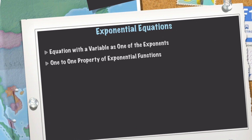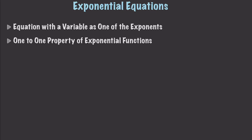So let's get into it. An exponential equation is just an equation with a variable as one of the exponents. Specifically, what I want to talk about right now is the one-to-one property of exponential functions. It sounds really complicated, but it really is not. All it is saying is, if we have a base with an exponent equal to another base with an exponent, and they are equal to each other, then we know that x is going to be equal to y.